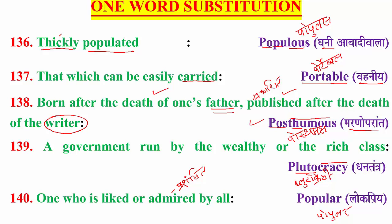Plutocracy in Hindi is 'dhan tantra'. Dhan means money, tantra means governance — so it means rule by the wealthy. In English: 'government run by the wealthy' or 'the rich class'. A government that is run by the wealthy and rich class is called plutocracy — dhan tantra.